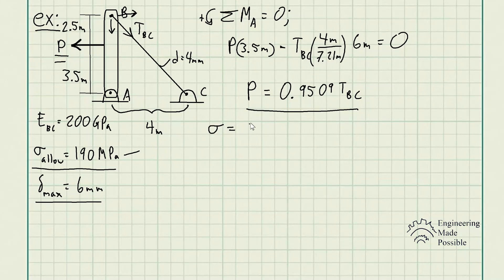We know the stress is equal to that force divided by the cross-sectional area. This force with respect to the cable in this case will be that tension, TBC here. That's going to be the force that's applied to that cable. Now we can actually solve TBC by having this criteria, the maximum allowable stress. So TBC is equal to that allowable stress times the cross-sectional area.